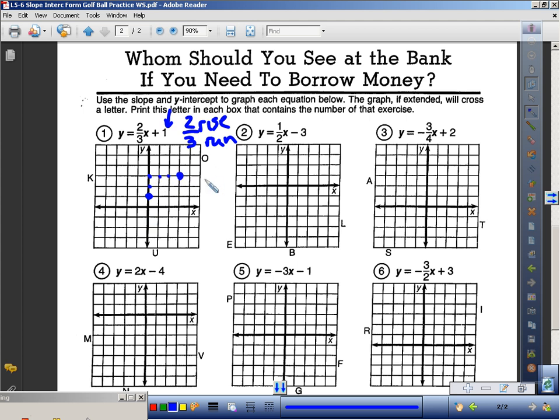Or I could go negative two over negative three, down two, backwards three. There's my line. I'm going to get a ruler, draw a line through them, and the letter that goes in the box is O.